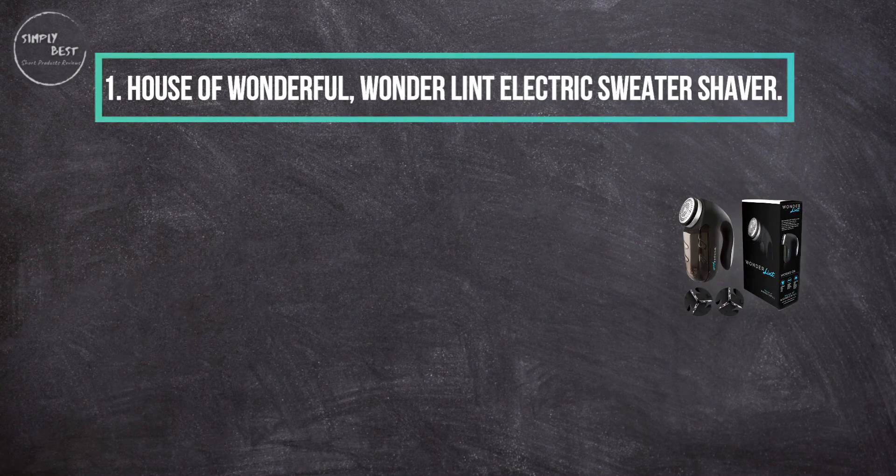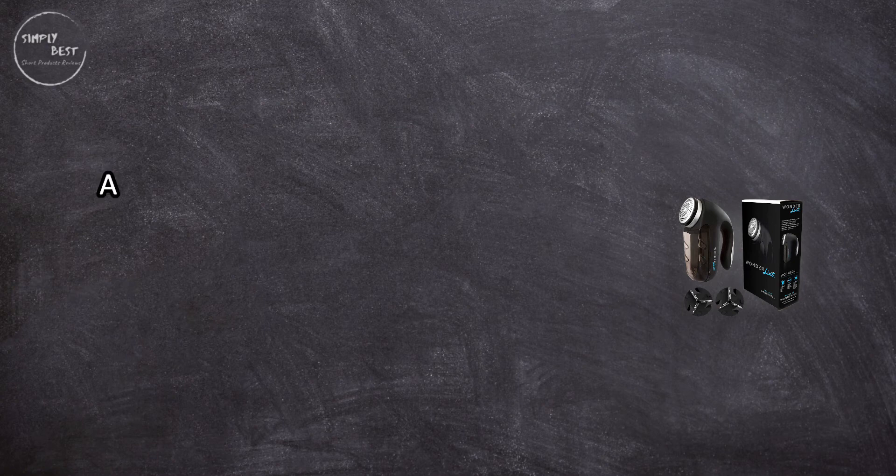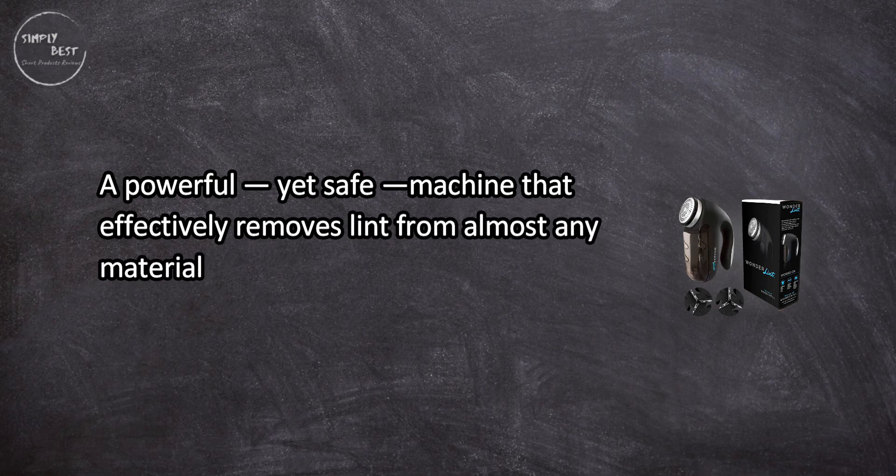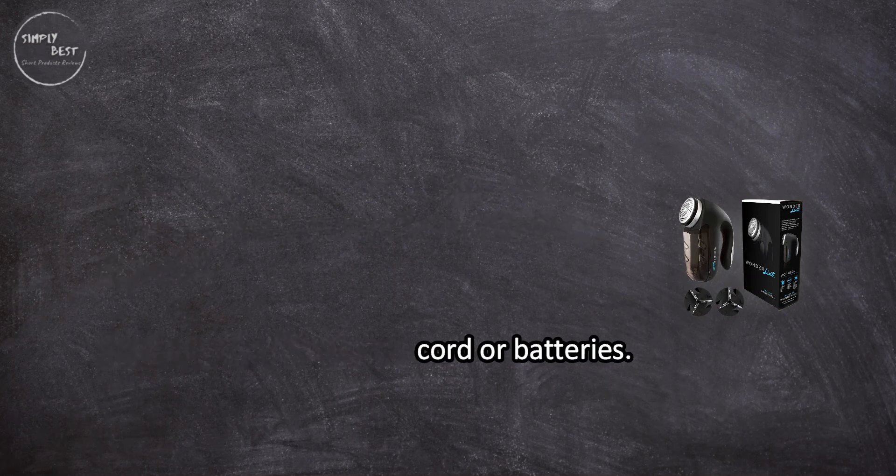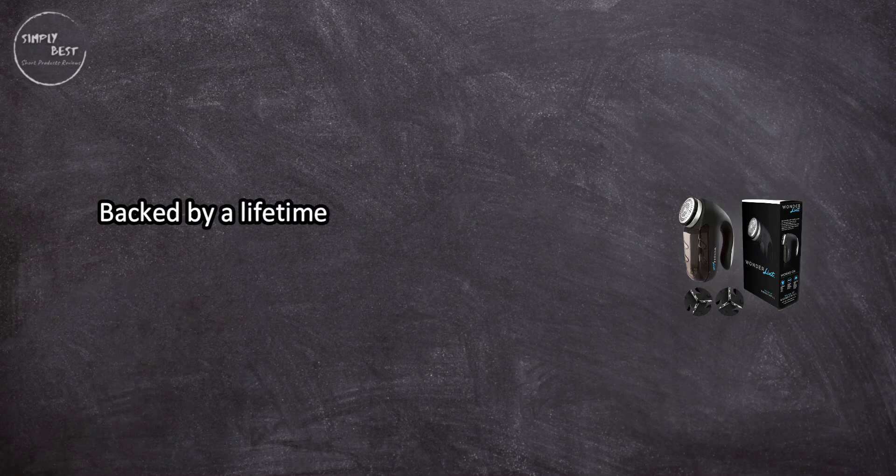At number one, House of Wonderful Wonder Lint electric sweater shaver, a powerful yet safe machine that effectively removes lint from almost any material. Can be used with electric cord or batteries, backed by a lifetime guarantee. Tops its competitors with power, performance, and versatility.